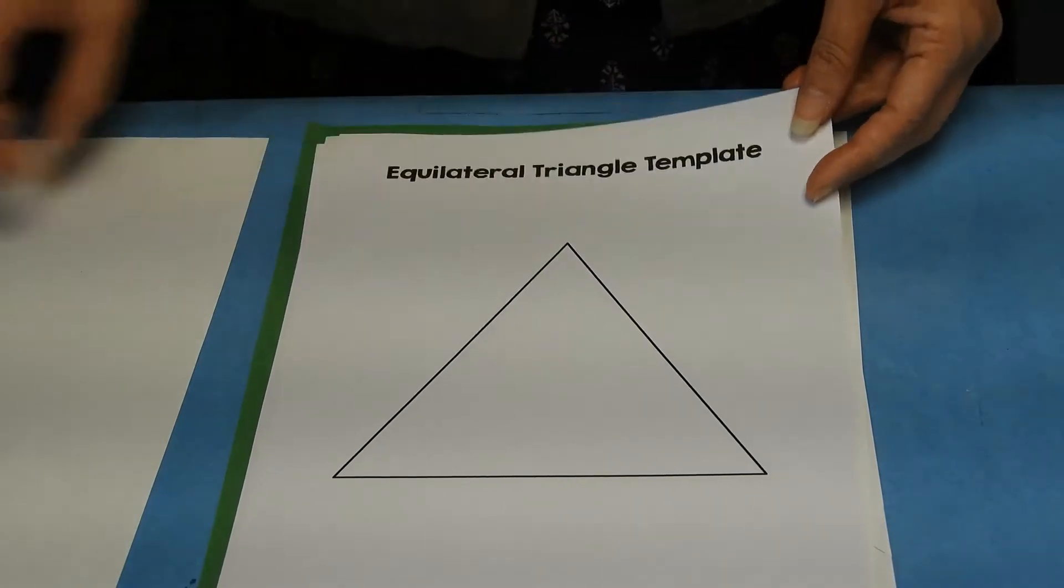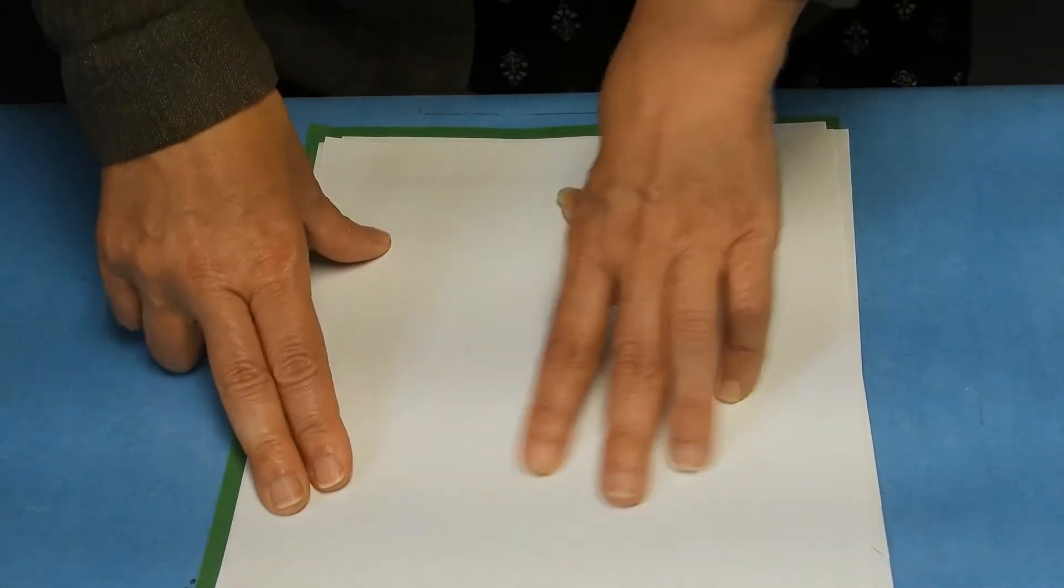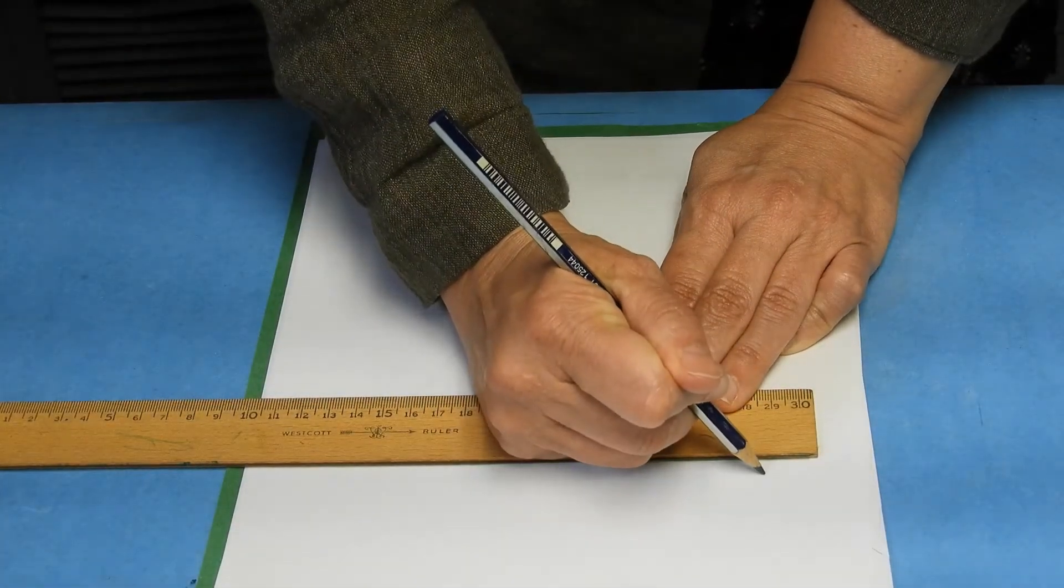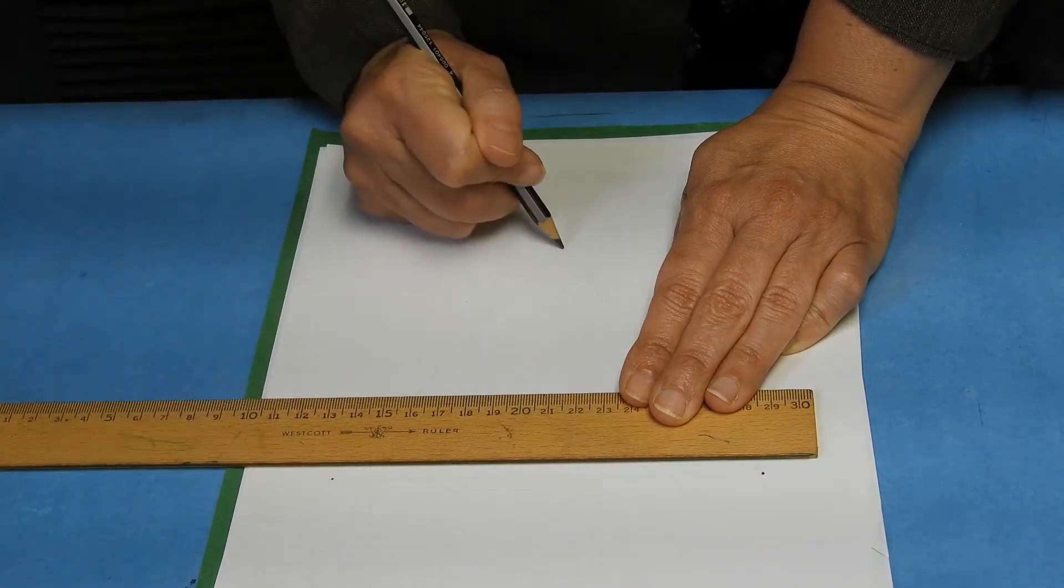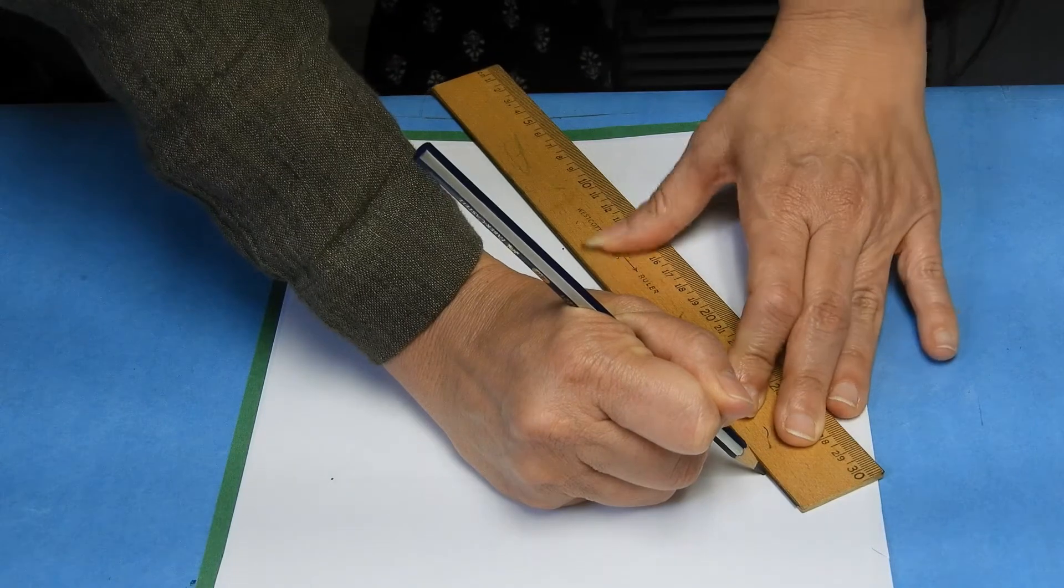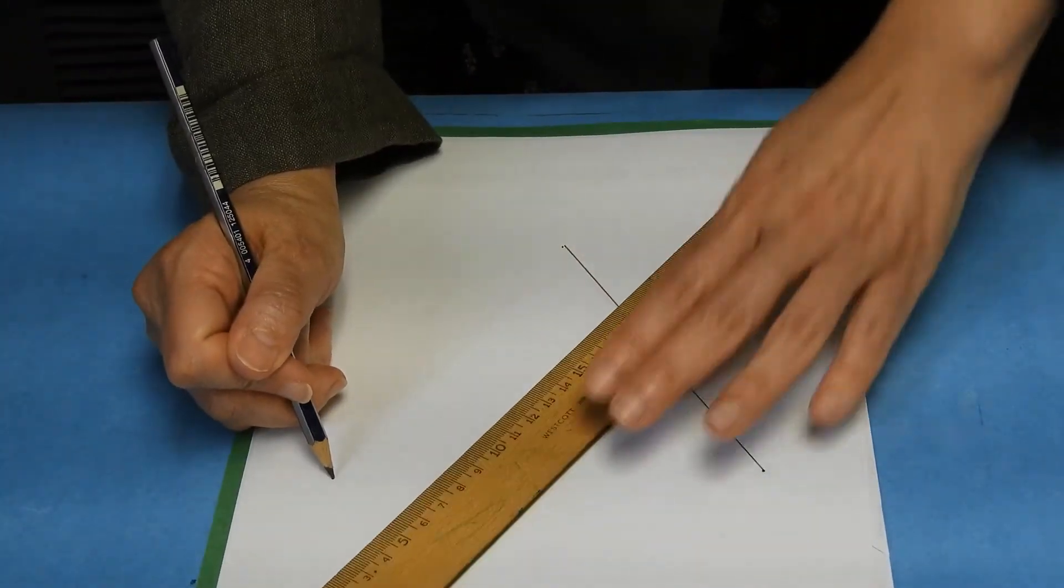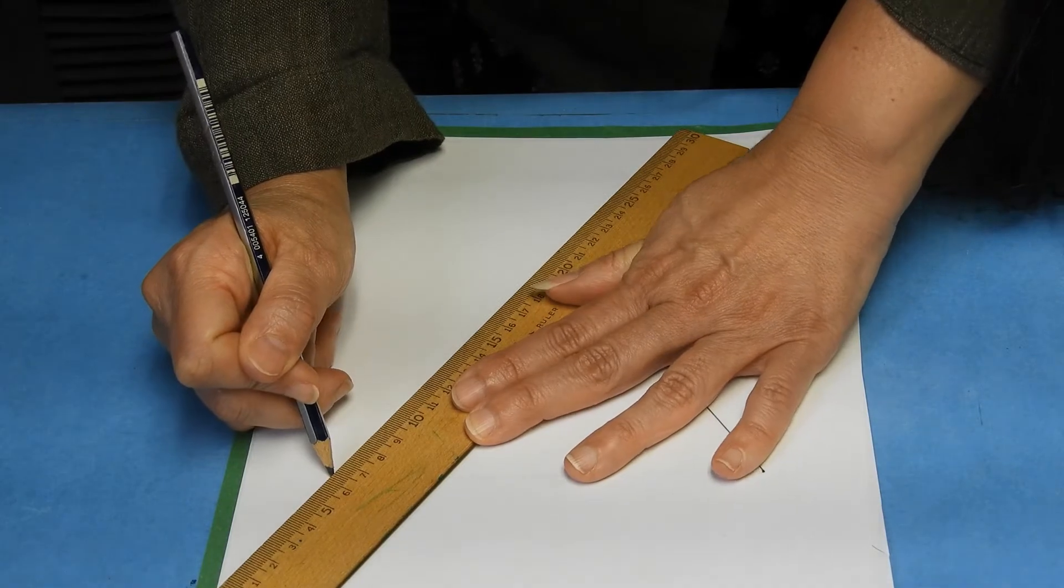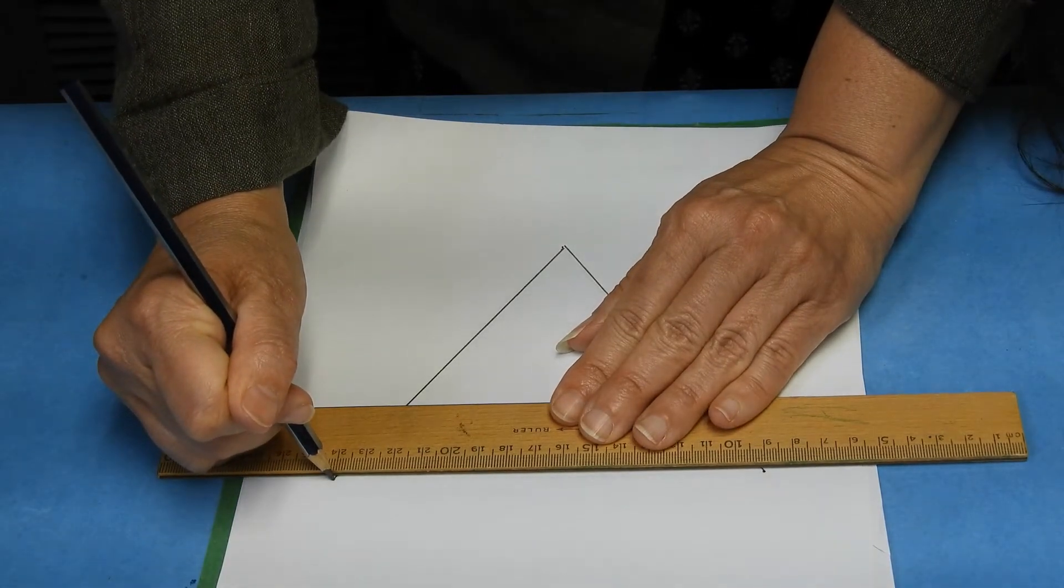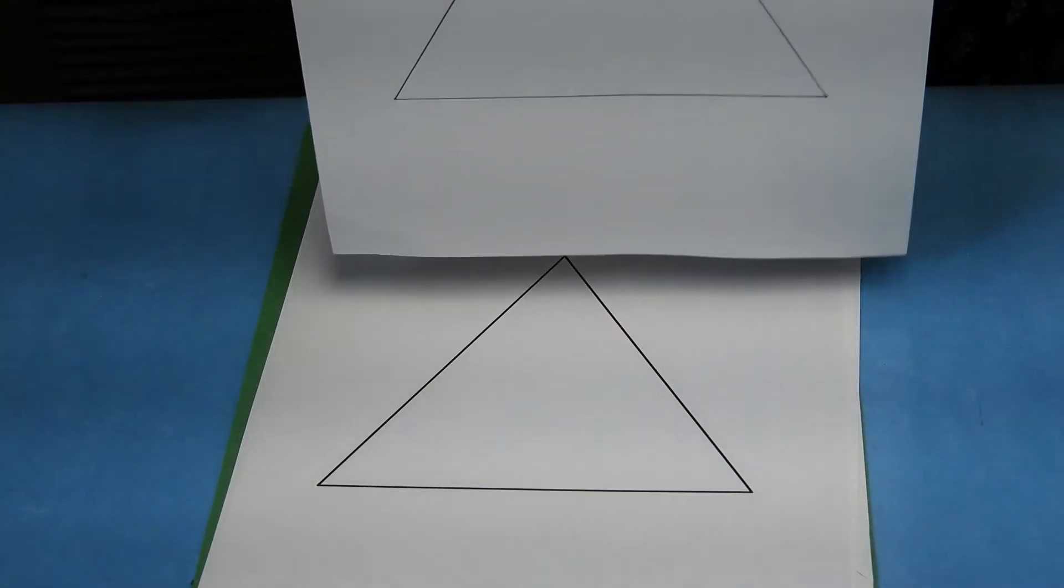All right, so we have this template and I'm going to show you how I use this template to draw another triangle. So I put a white piece of paper on top and I got my ruler out, and really what I did was I just found the corners, the vertices, and I marked them. Then I just used my ruler. Instead of trying to line up the line to the line, I found it easier to mark it. So if you mark the vertex to vertex and use your straight edge, your ruler, and your pencil, you can make a copy of the template.